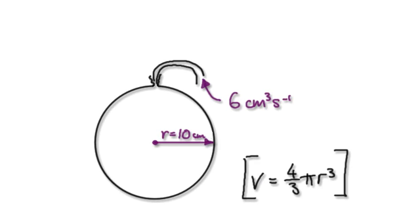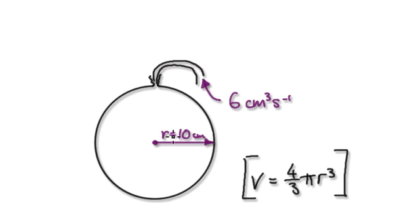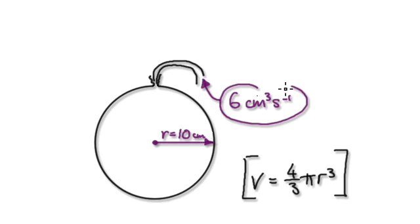Let's give you guys some more practice. Here you've got a spherical balloon. You're going to pump air into this balloon. As you pump air into there, the radius will get bigger and bigger. The amount of air that you're pumping in is 6 centimeters cubed per second.